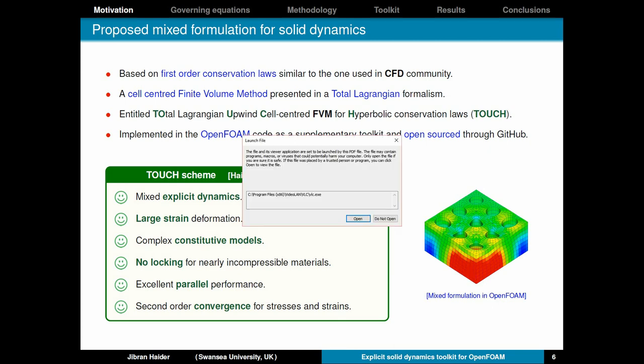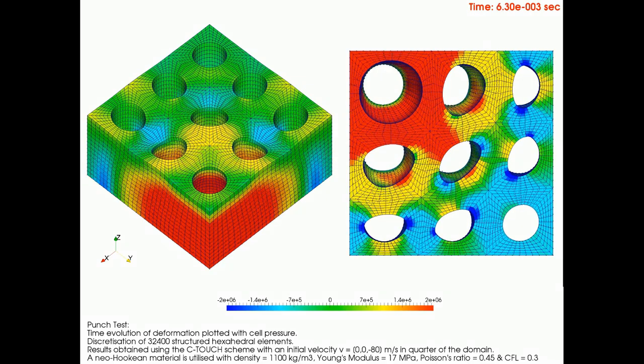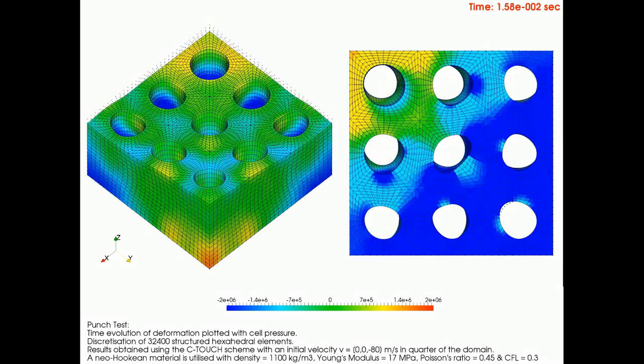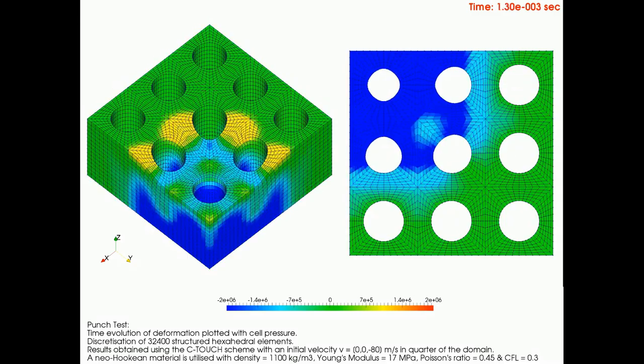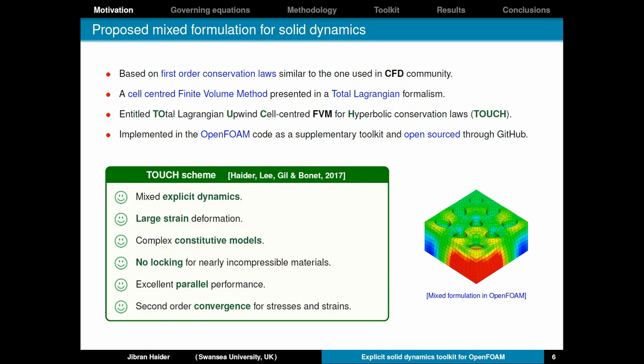Now I'm going to show you quickly a simulation of this rubber block where you punch it in quarter domain and you see how it deforms. So here you see the smooth pressure distribution in the domain. So let's talk about how you can achieve this.